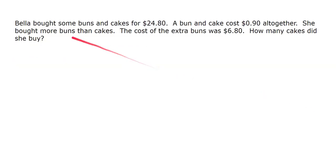Bella bought some buns and cakes for twenty-four dollars and eighty cents. We do not know the number of buns and cakes, but we know the total cost is $24.80. A bun and a cake cost 90 cents altogether — meaning one bun plus one cake costs 90 cents. She bought more buns than cakes. The cost of the extra buns that she bought was six dollars and eighty cents. How many cakes did she buy?